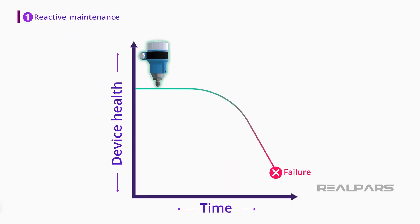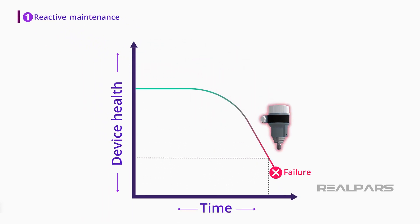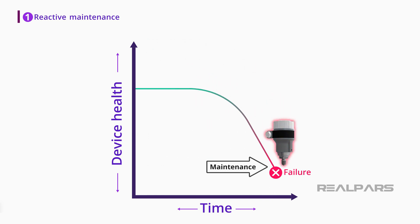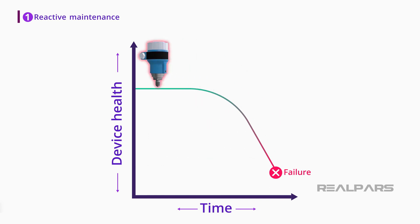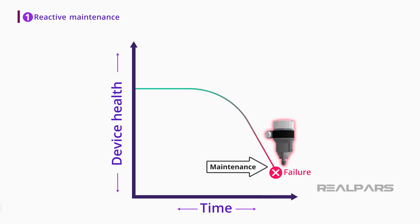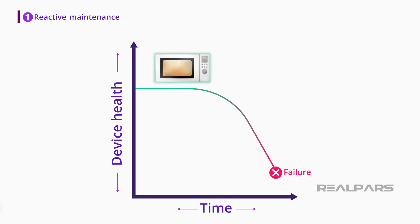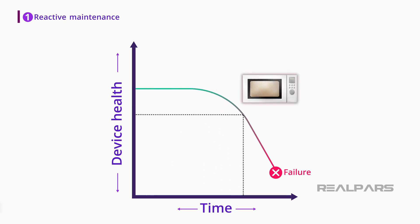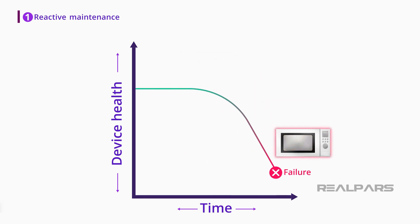With reactive maintenance, you simply wait until a device breaks down and then perform maintenance on it. That means you wait until the device fails and requires maintenance and then react — hence, reactive maintenance. For example, let's say you have a microwave oven at home. You use it for a few years until it gets to the point of failure and it won't turn on anymore.